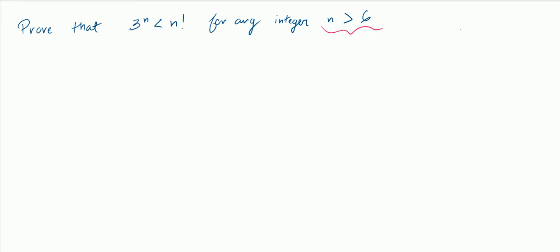My first step in a proof by induction is the basis step. My basis step is trying to prove this statement — which I can call P(n) — for the lowest possible value of n.